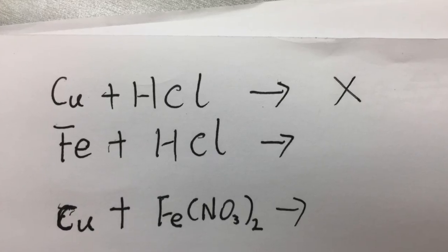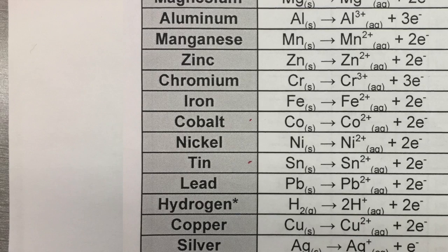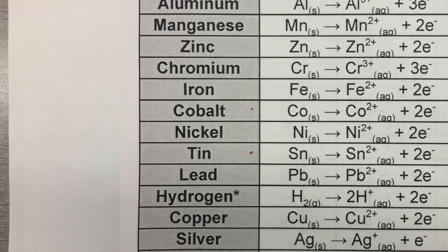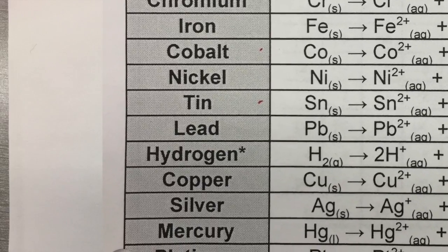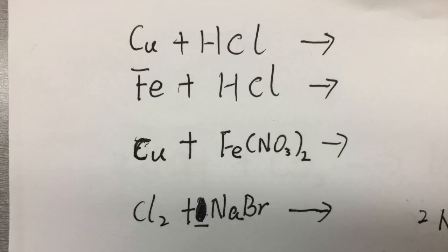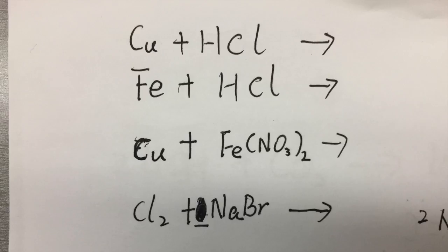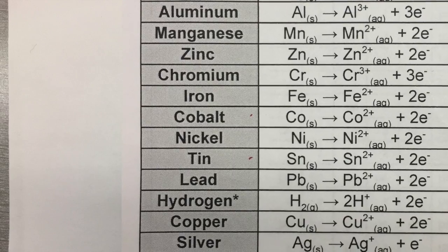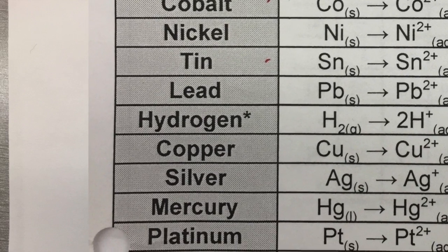The answer for copper and hydrogen is no reaction. Now let's look at iron and hydrogen: iron has a greater activity than hydrogen, so this reaction will happen — iron replaces hydrogen and combines with chloride. For the third example, copper and iron: iron has greater activity than copper, so copper cannot replace iron, and this reaction will not happen either.